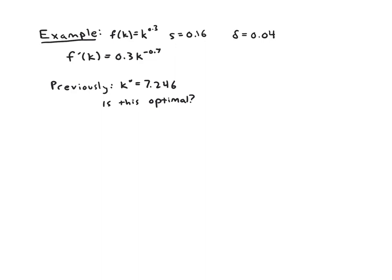But let's try it out. Let's do some calculations. So the mpk is f prime. So mpk is 0.3. Then we'll plug in for k star 7.246 to the negative 0.7. This is not something you could do in your head. You'll just have to plug this into the calculator. And we get 0.075-ish. I think I rounded off. And now we can compare that to delta. And that is definitely not equal to delta. Delta is 0.04. So we know that this is not the golden rule level of capital.